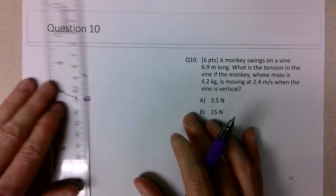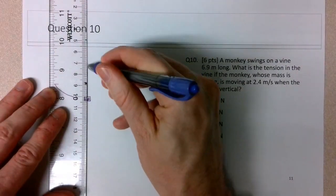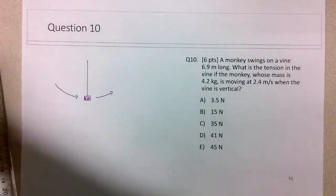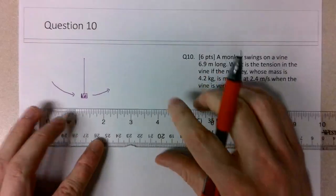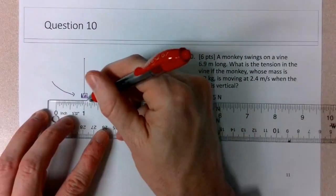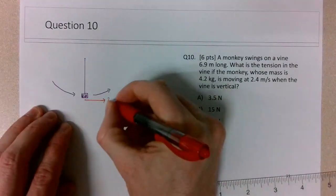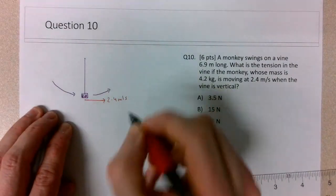The vine is vertical and swinging, and we know that at the bottom there's a horizontal tangential speed here of 2.4 meters per second. So the monkey is swinging in this circular motion,